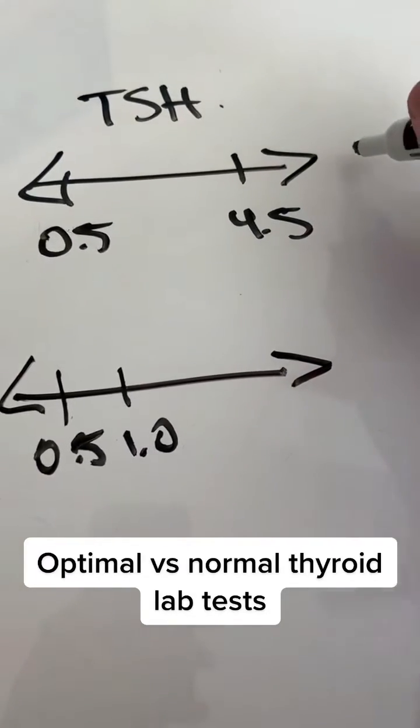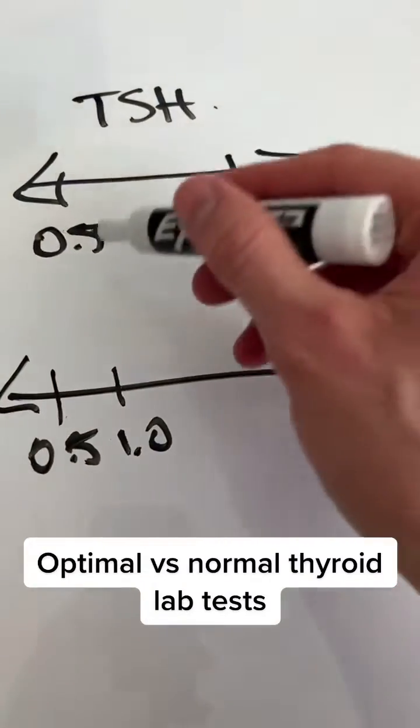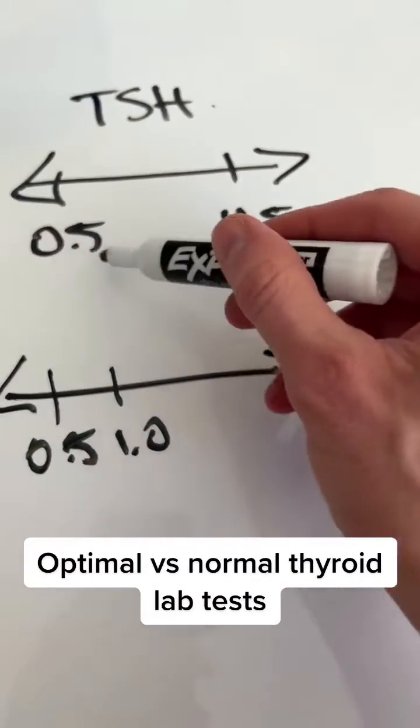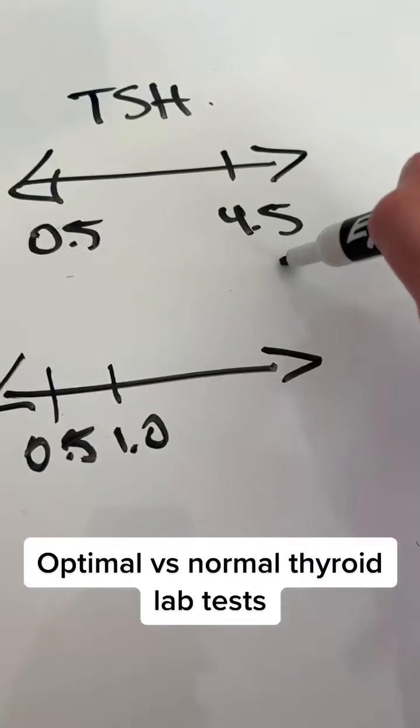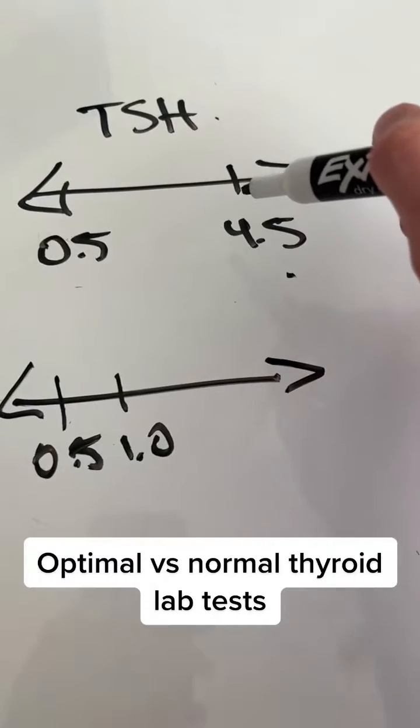Now, when I say the normal reference range, this is what I'm talking about. If you look at the reference range provided by the lab company, you will see that it's usually 0.5 to 4.5. So if you fall anywhere between these two values, your doctor will tell you that it's normal.